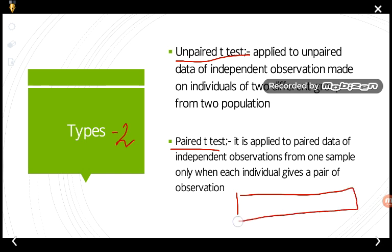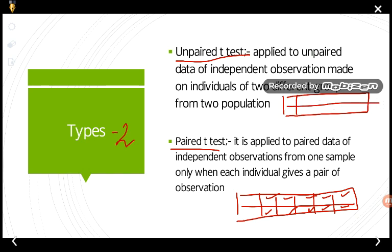If in an observation table the observations are paired, then it is a paired t-test. If the observations are not paired — for example, if one of the values is missing — then the observations are considered unpaired, and the unpaired t-test is applied to such unpaired data.